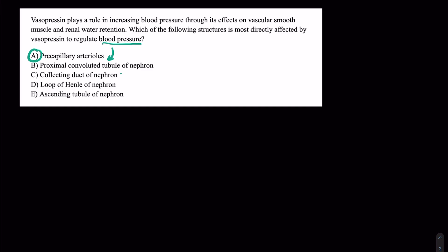Even though the collecting duct of the nephron is a site for action of vasopressin, it is not going to have as much to do with blood pressure. That's going to be the V1 receptor. That's all about blood pressure.